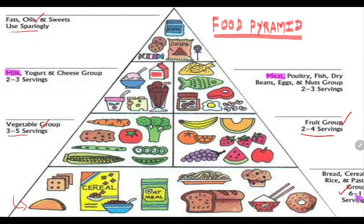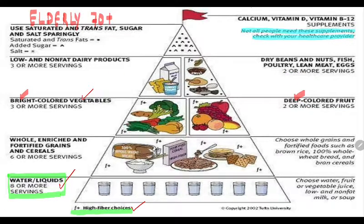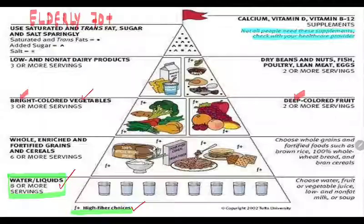Rice, bread, and cereals remain at 6 to 11 servings, followed by fruits and vegetables — with bright-colored vegetables and deep-colored fruits recommended — then milk and milk products, and at last, fats. Additionally, because aging is associated with osteoporosis, calcium, vitamin D, and vitamin B12 for anemia can be supplemented for those who need it. This is all about the food pyramid.